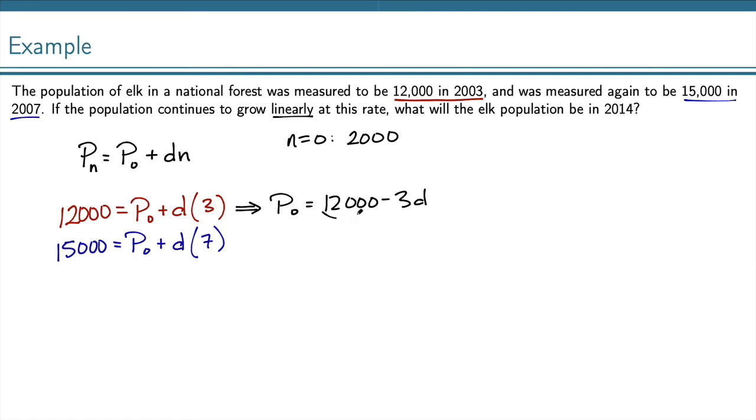I can now take this value for P0, and I can plug it in right here. So, that gives me 15,000 equals 12,000 minus 3D plus 7D. Well, I can subtract 12,000 from both sides, and I get 3,000 equals 4D. Dividing both sides by 4, I get 750 equals D.